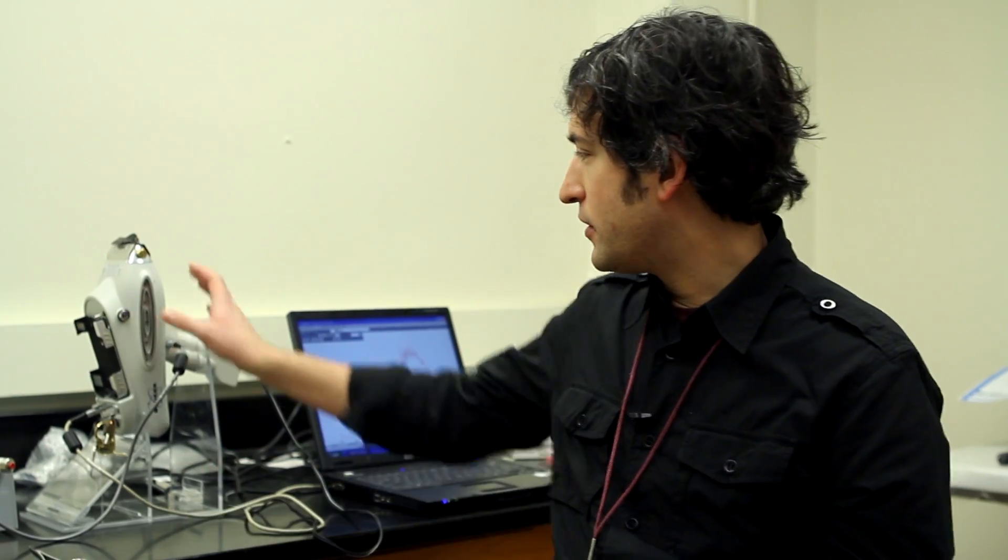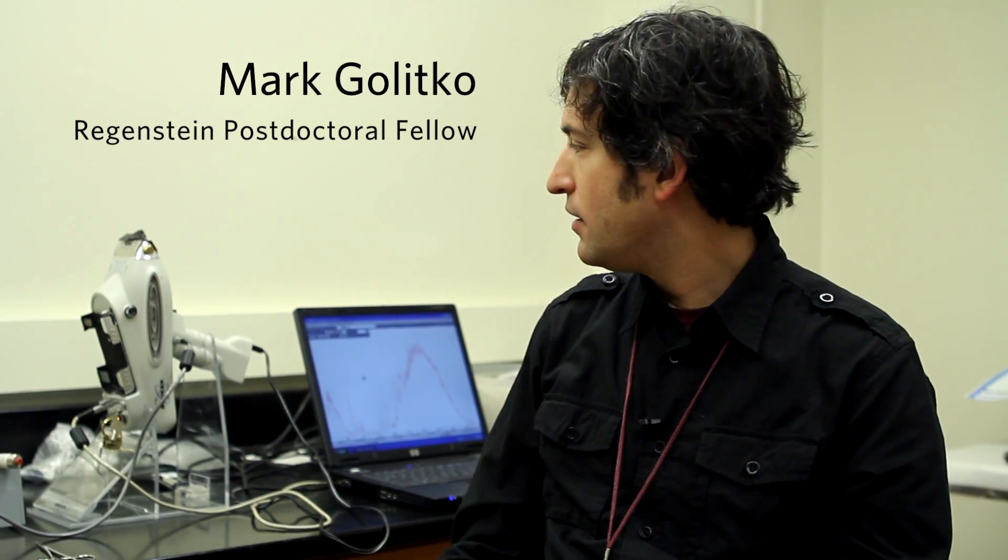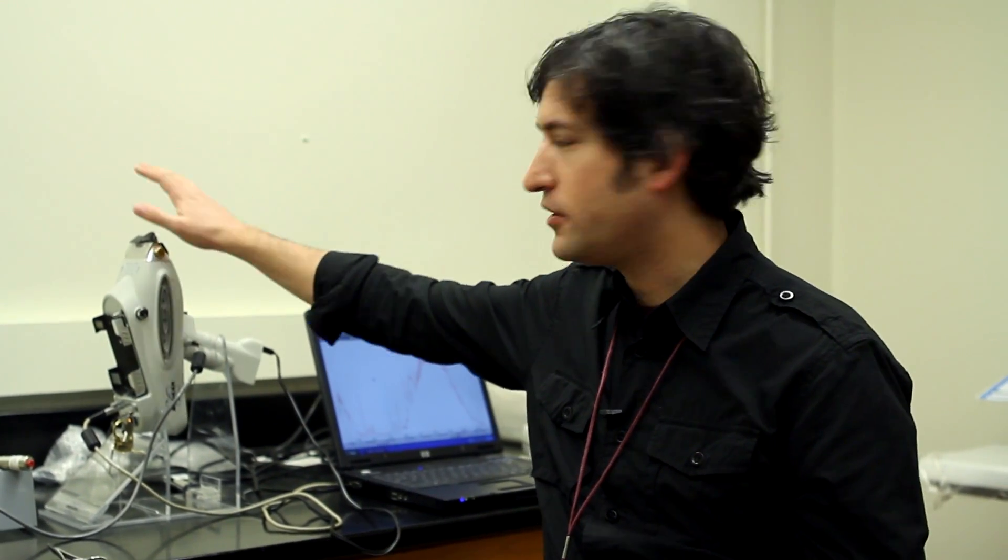Basically the way it works is that within the gun here there's actually an x-ray tube similar to what you would have at a dentist to x-ray your teeth. And it actually emits x-rays upwards like this under the sample which is then sitting on top here.